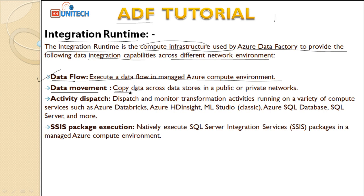The copy data activity copies data from one source to another. By using the integration runtime, it provides the facility to move data from a public or private network. The public network is the Azure network where we can directly connect with Azure, and the private network could be your SQL Server locally installed on your machine — that is your on-premises environment.